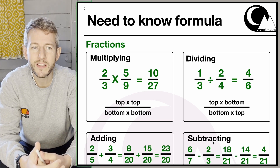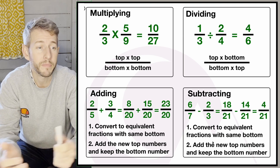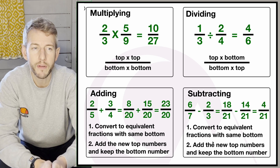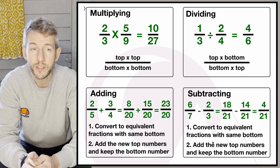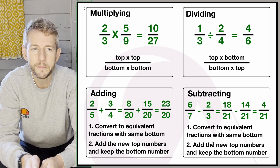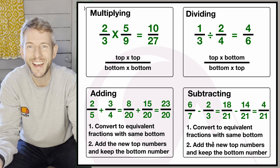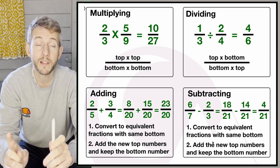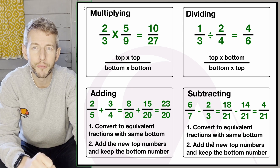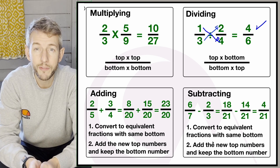For multiplying fractions, multiply top by top and bottom by bottom. So 2 over 3 times 5 over 9 gives 10 over 27. For dividing fractions, the rule is top times bottom over bottom times top. So 1 over 3 divided by 2 over 4: 1 times 4 gives 4 on top, and 3 times 2 gives 6 on the bottom, so the answer is 4 over 6. If you need more practice, I'd suggest going to the tutorial.